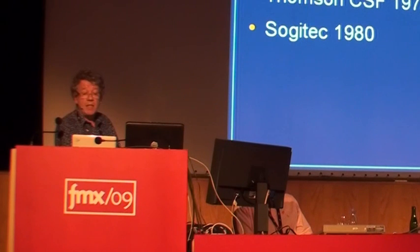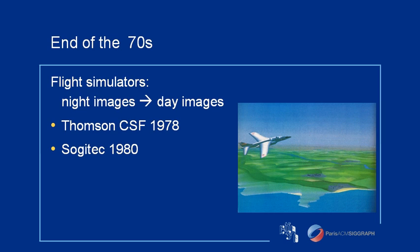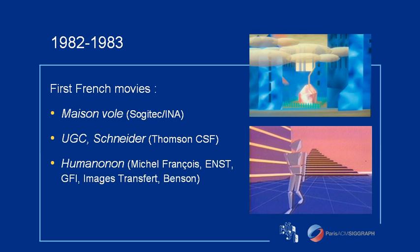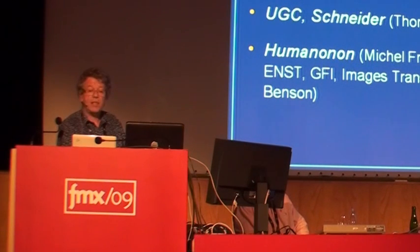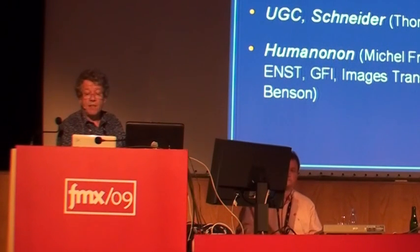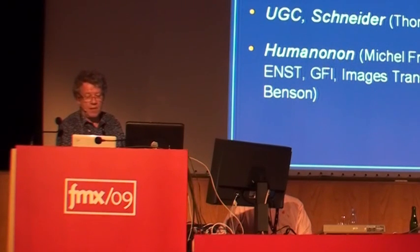In France, there were two main companies making these simulators: Thomson and Sojitek. These two quickly understood they could use the techniques they learned making simulation software for the army, aircraft companies, boat manufacturers, etc., to make beautiful images for the entertainment industry. So in France, it's in 1983 we saw the first French CG movies. Note that in 1982, Tron was released in the USA. Maisonvol was directed by André Martin and Philippe Keo from INA, but made at Sojitek with their simulators. UGC and Schneider are a couple of ads made by Thomson on their simulators. And Humanon was directed by Michel François, with many companies and schools to help. It was in very high definition, more than 7,000 by 5,000.